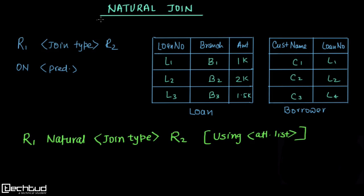Welcome to techtot.com. In this lecture we will be understanding natural join. Till now we have understood inner join, outer join, and types of outer join. Natural join is not a type of join — it's basically how we are joining two tables. The previous query writing style uses r1 join_type r2 on predicate, where depending upon the type we write inner join, left outer join, right outer join, etc.